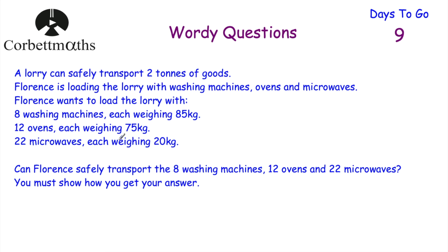Feel free to press pause and try this question now. I've read it through again just to make sure I really understand it. In this question we're dealing with tons and kilograms, so there are units involved. We want to find out how much the washing machines, ovens, and microwaves weigh altogether. The lorry can safely transport two tons, and one ton is 1,000 kilograms, so two tons is 2,000 kilograms — that's how much the lorry can safely carry.